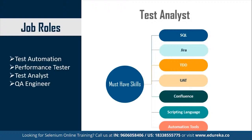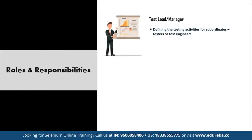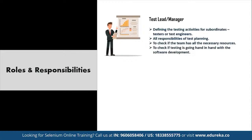Now that you know about the different job profiles, let's look at the roles and responsibilities of a testing automation engineer. Every company defines its own level of hierarchy, but broadly there are two levels in a software testing team. The first is the test lead or manager, who is responsible for defining testing activities for subordinates, test planning, checking that the team has all necessary resources, ensuring testing goes hand in hand with software development in all phases, preparing status reports, interacting with customers, and updating the project manager regularly.